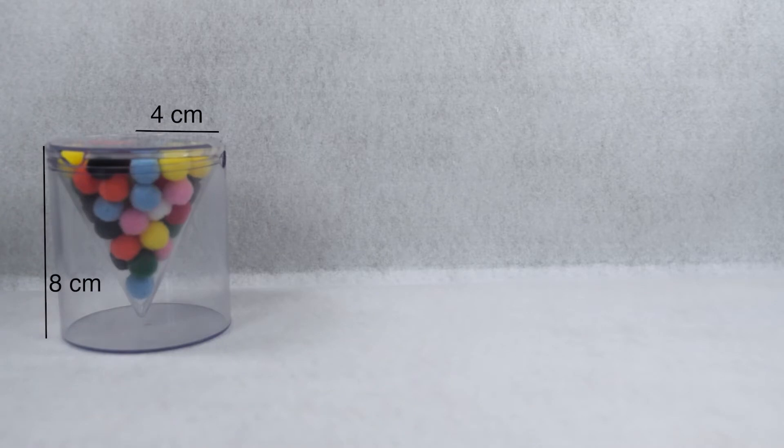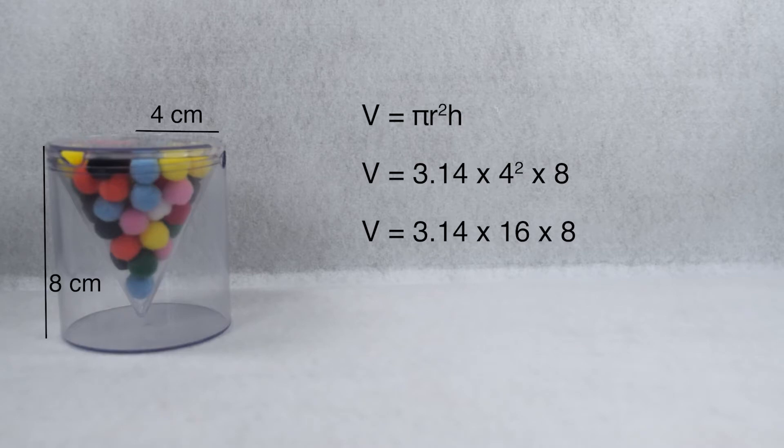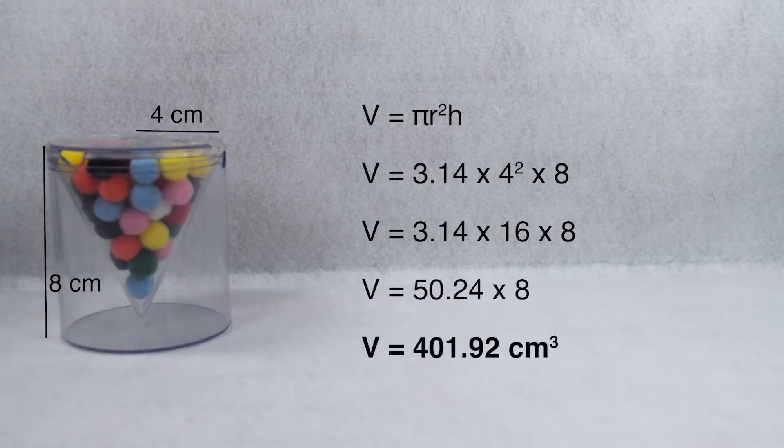We know how to find the volume of a cylinder. Volume is pi times radius squared, so 3.14 times 4 squared times 8. 4 squared is 16, so 3.14 times 16 times 8. 3.14 times 16 gives us 50.24, then multiply that by 8, and the volume of our entire cylinder comes out to be 401.92 cubic centimeters.